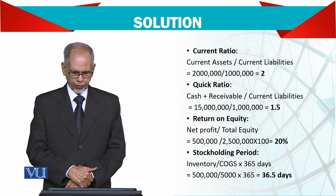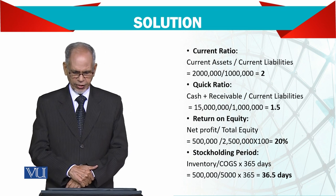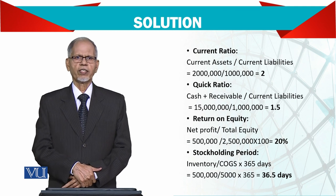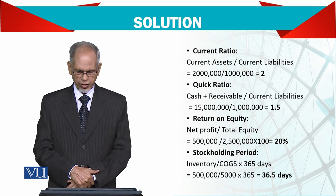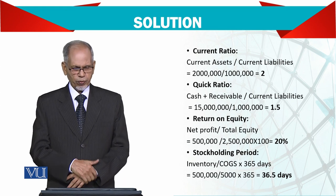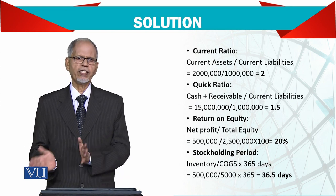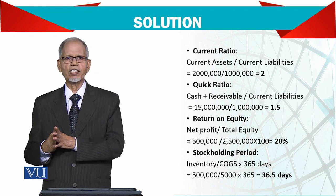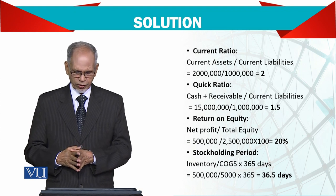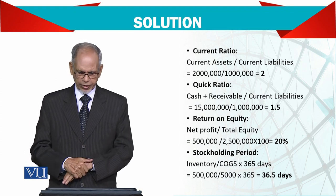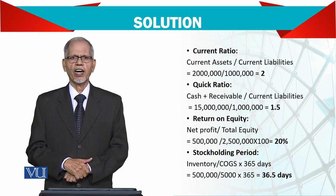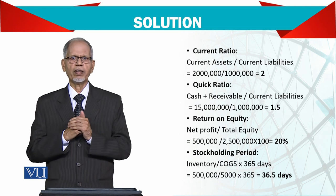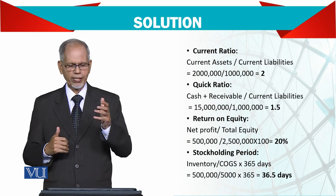Inventory days ratio: पहले आप inventory rate निकालें और फिर 365 को divide करें inventory rate से। That will give you a figure of 36.5 days। इसका मतलब है कि आप जो goods ला रहे हैं उनको 36 दिन में बेच रहे हैं।